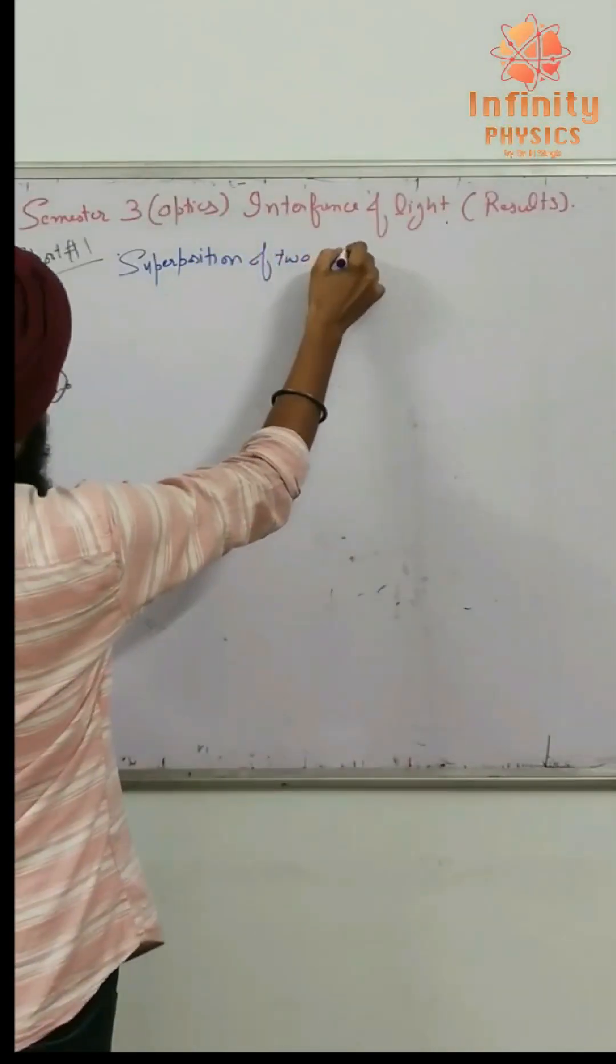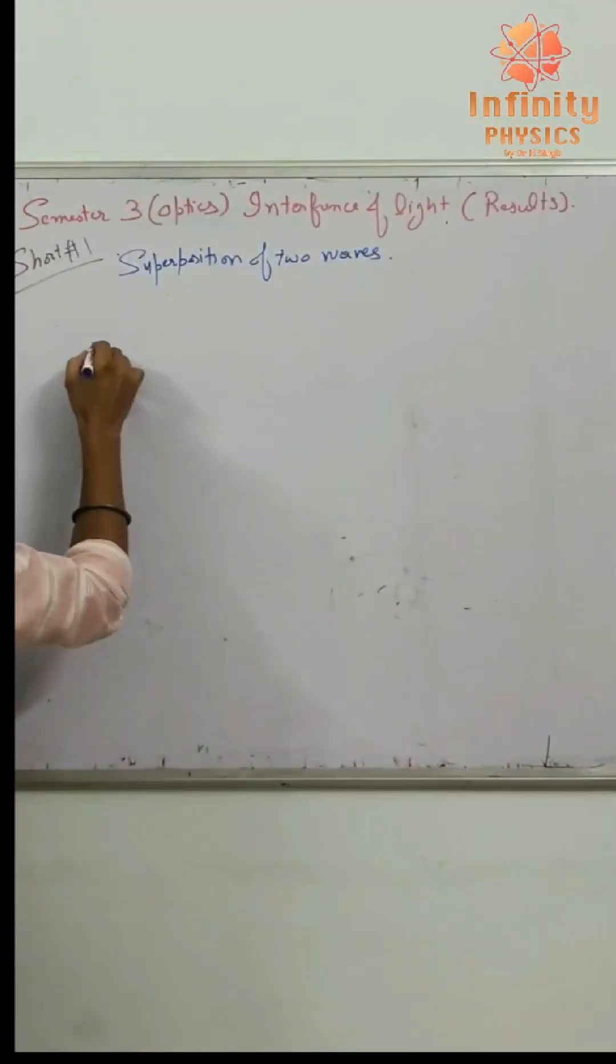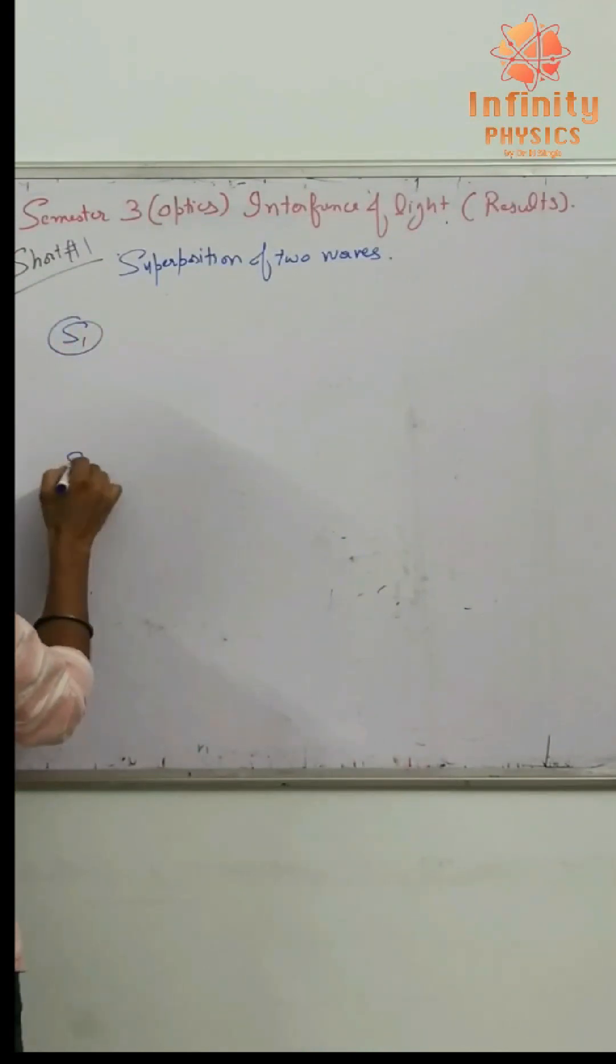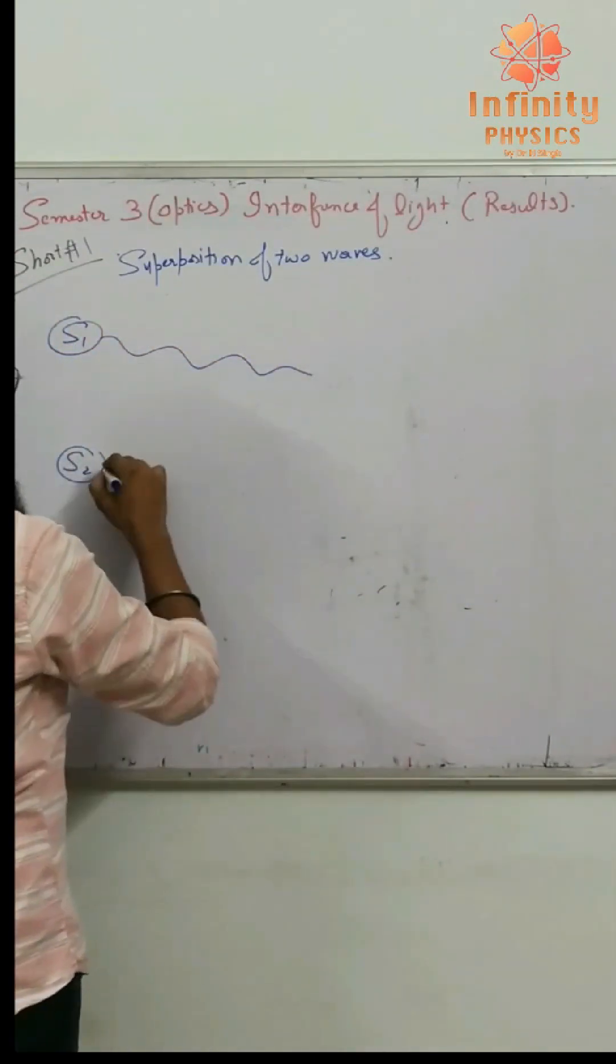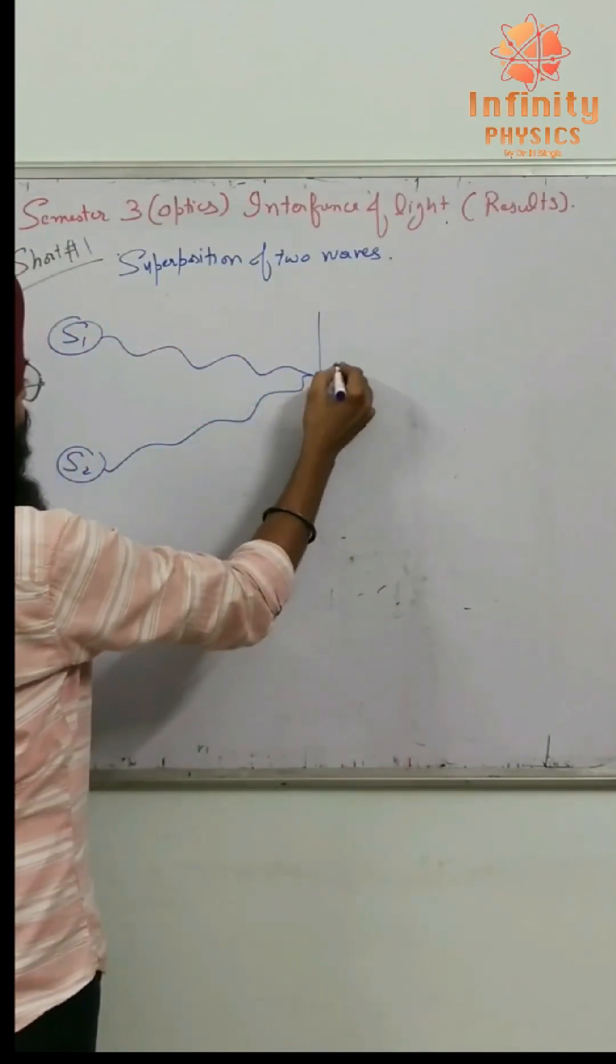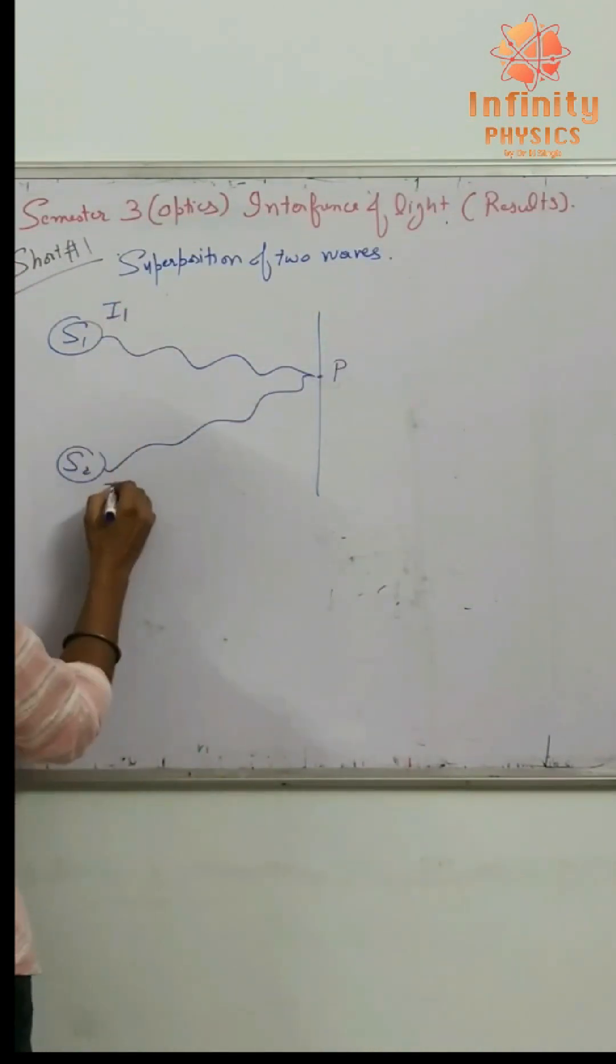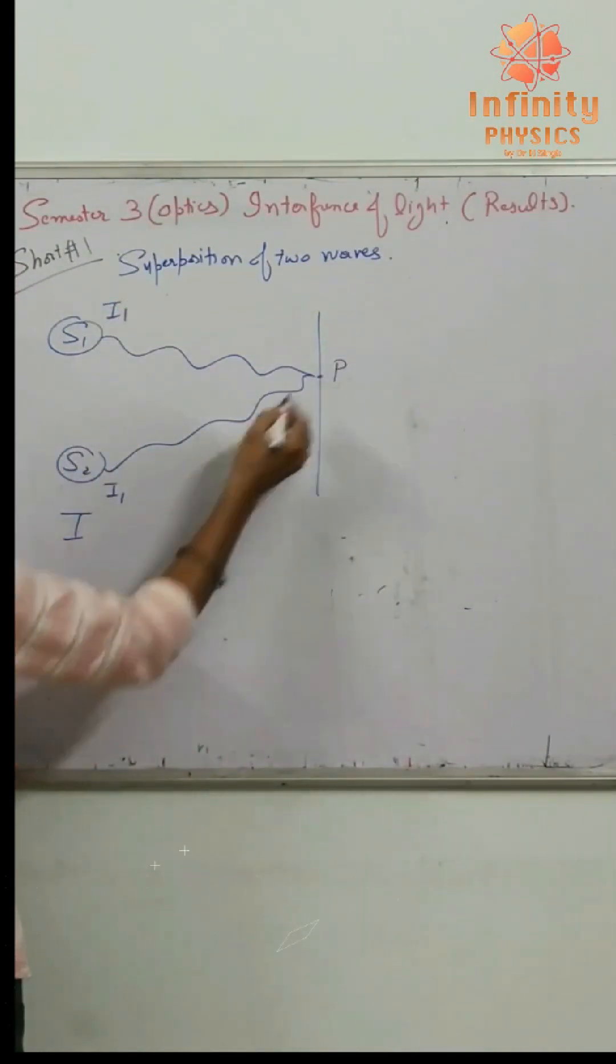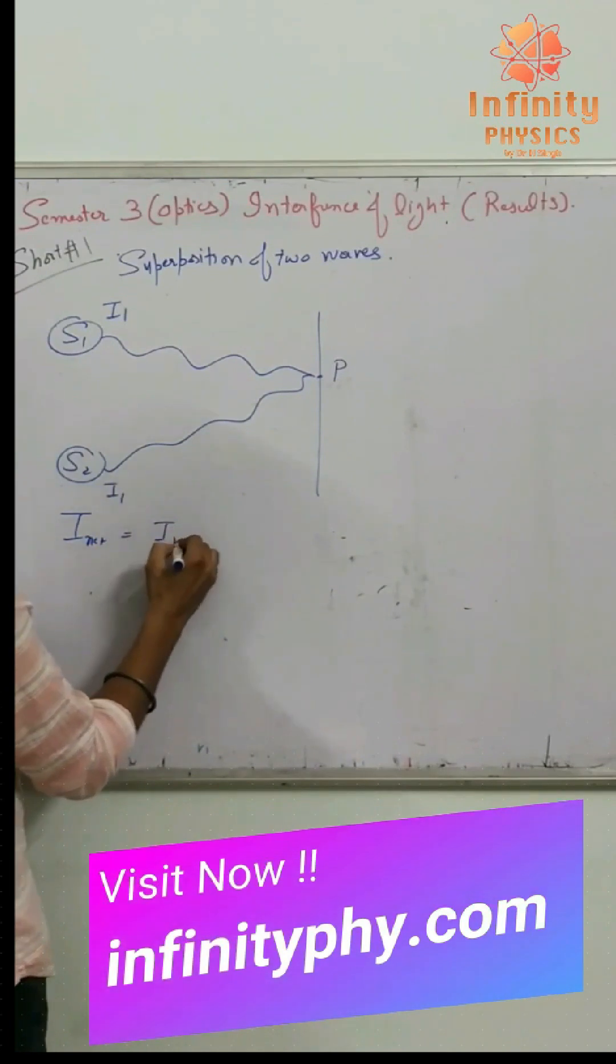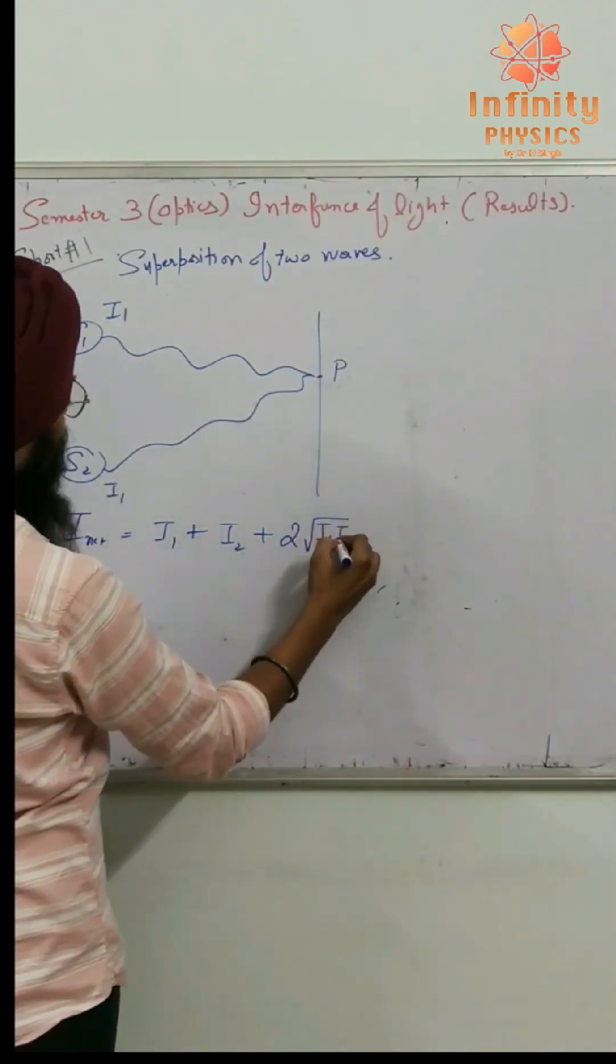Superposition of two waves: source one, source two, wave one, wave two reaching point P. Intensity is I1, light intensity is I2. Then the net intensity at this point is I1 plus I2 plus 2 under root I1 I2 cos phi.